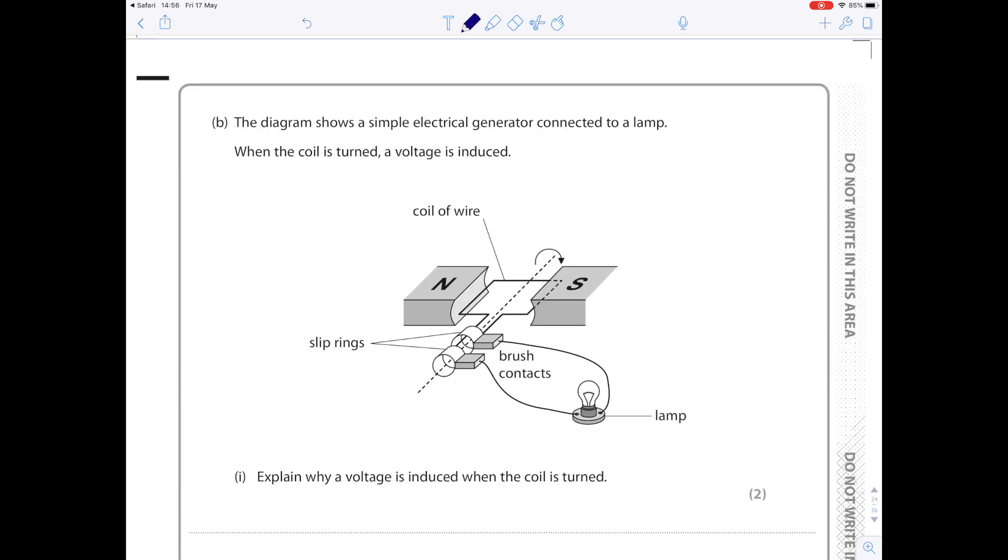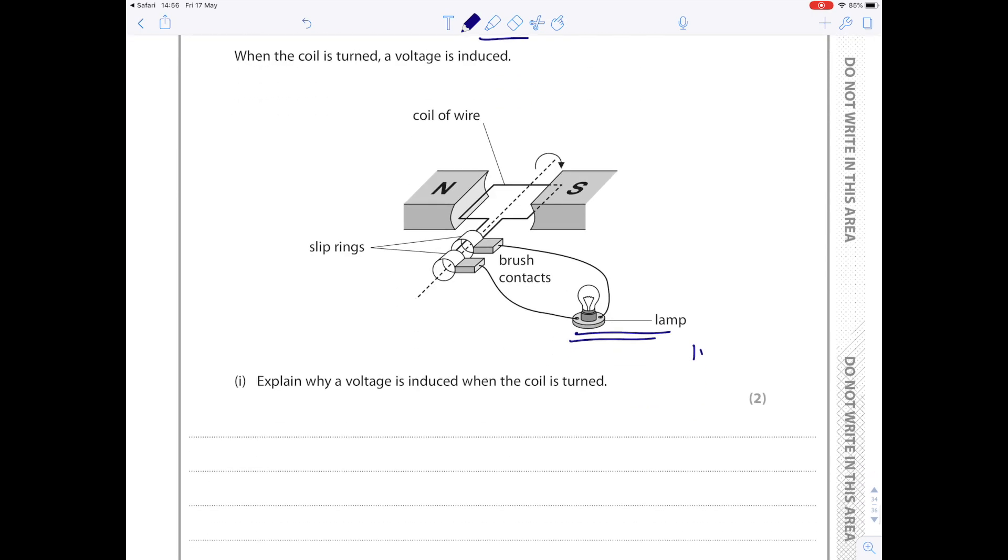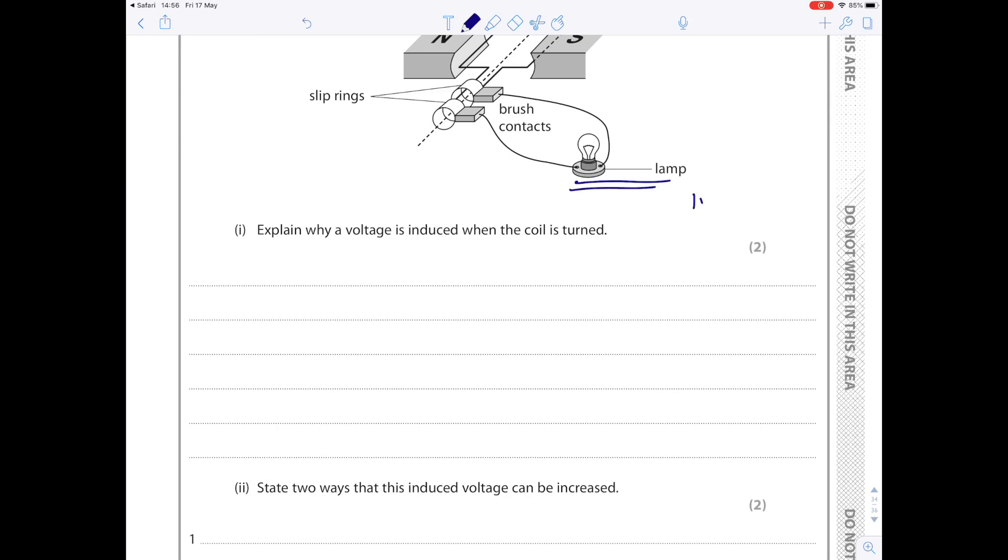Right, let's look now at this magnetism question which they're always super popular, and I promise you can write the same answer every time. So the diagram shows a simple electrical generator connected to a lamp. When the coil is turned, a voltage is induced. Look, it's told you that it's a generator, so make sure you read the question. Some people might be tempted into thinking that this is a motor because they've seen similar diagrams being described as motors, but the crucial thing here is that we have a lamp. If it had been a motor, then we would have seen a cell here, because remember with a generator, we're trying to produce current.